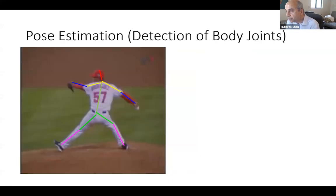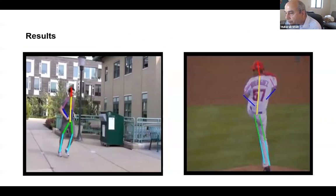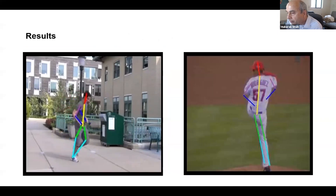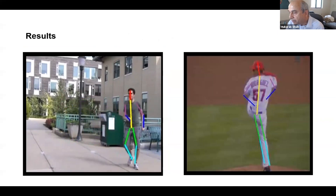Another thing we can do is, given a person, detect the body joints — left arm, left elbow, right elbow, foot, head, and so on. Given a video, we can detect these different joints. It's not perfect but it's a very complex problem. A baseball action is much harder because of the human body articulation and difficulties.